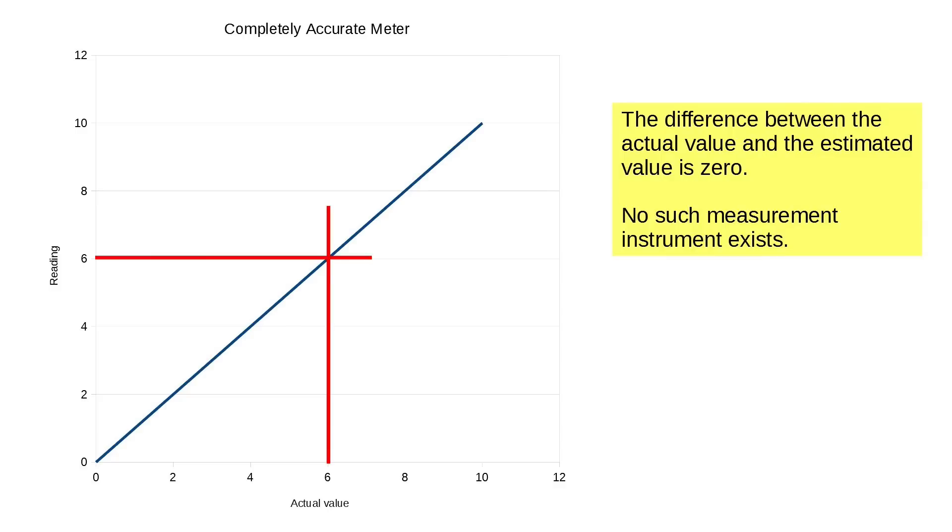Here's a completely accurate meter, which of course, no such instrument actually exists. And the difference between the actual value and the estimated value is zero. So if you have six volts in, it shows six volts, period. Just six volts.